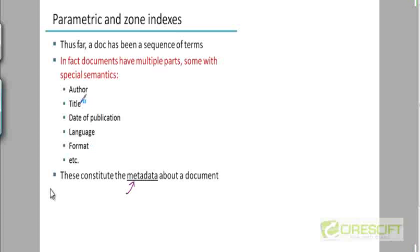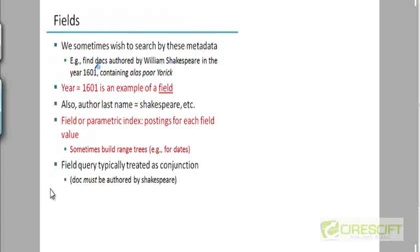While parsing your corpus, you could create the standard inverted index as before based on the body of the text. In addition to the standard inverted index based on the content of the documents, you could create separate indexes for these metadata fields. Sometimes a user may want to search for documents based on this metadata information. For example, the user may like to have documents authored by William Shakespeare in the year 1601 which contain the text 'Alas, poor Yorick.' The year of publication 1601 and the author's last name Shakespeare are examples of metadata fields.